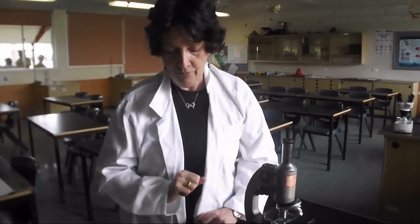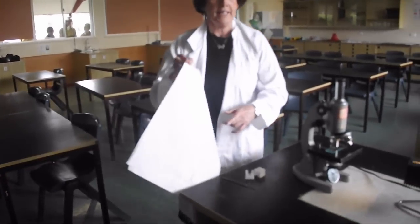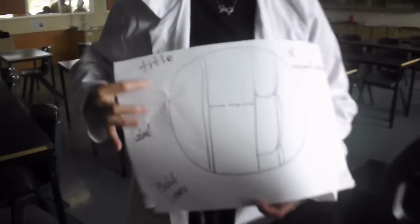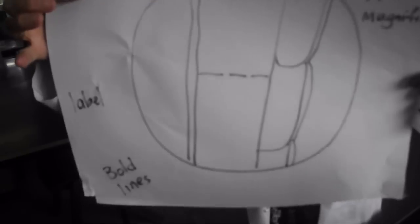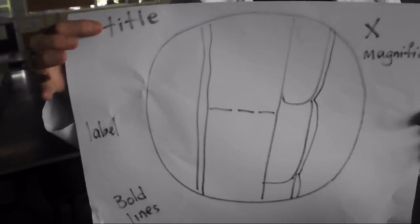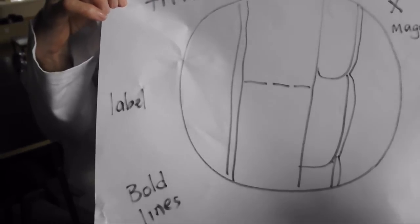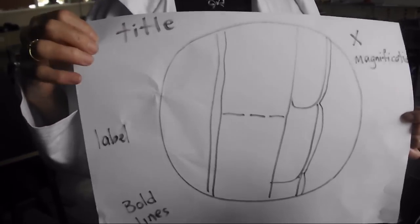On the slide, having found the slide, we then use a bold pencil to draw the field of view. We always write the title, the times magnification, in this case would be 300 times, and we use bold pencil lines and then we put the labels. Have fun with your microscope work. Cheers!